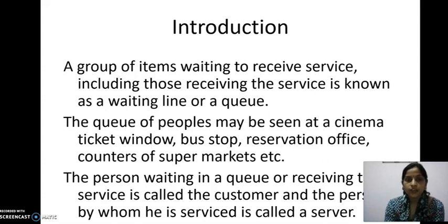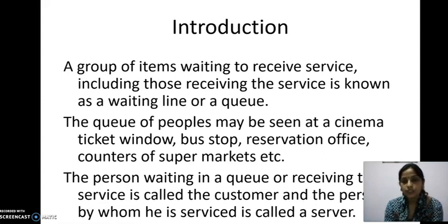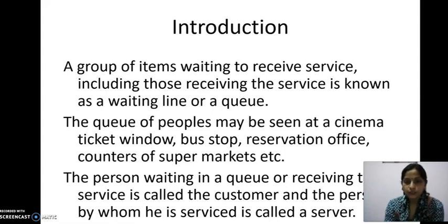A group of items waiting to receive service, including those receiving the service, is known as a waiting line or a queue. A queue of people may be seen at a cinema ticket window, bus stop, reservation office, counters, etc. The person waiting in a queue or receiving the service is called the customer, and the person by whom he is serviced is called a server.